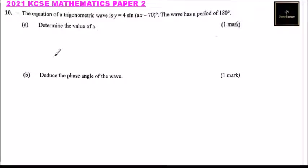Question number 10: The equation of a trigonometric wave is y equals 4 sine (ax minus 70) degrees. The wave has a period of 180 degrees. Determine the value of a.